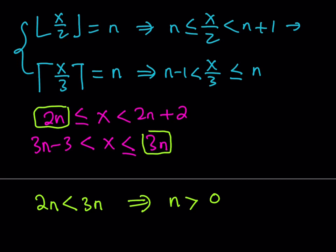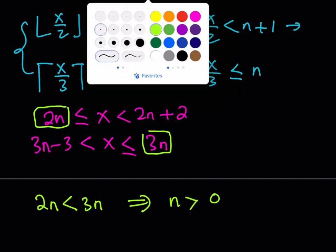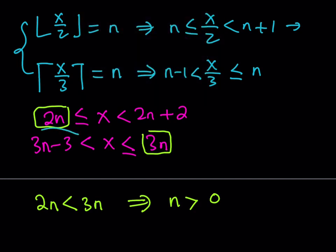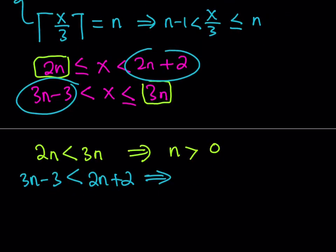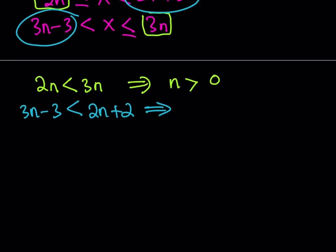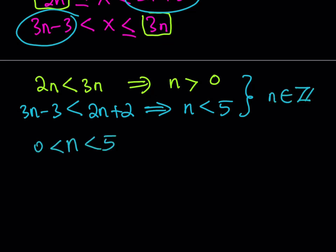For the second comparison, we compare the other pair of boundaries: 3n minus 3 must be less than 2n plus 2. Subtracting 2n from both sides gives n less than 5. Both conditions must hold simultaneously, so we take the intersection. Since n is an integer strictly between 0 and 5, n can be 1, 2, 3, or 4.